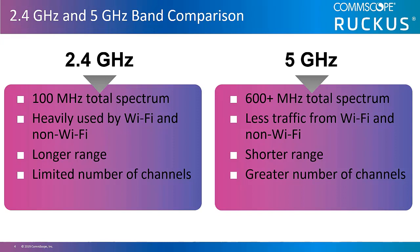Unfortunately, there is only 100 megahertz of usable space within the 2.4 gigahertz spectrum. Until recent years, 5 gigahertz has not been widely used by non-Wi-Fi devices, meaning less contention from non-Wi-Fi sources. The trade-off with 5 gigahertz is usually shorter range; however, as more users adopt Wi-Fi, shorter range becomes an advantage because it can handle higher density with less interference. In general, 5 gigahertz is very suitable for enterprise use, and 5 gigahertz operation is more suitable for high-density deployments because of the greater number of available non-overlapping channels.